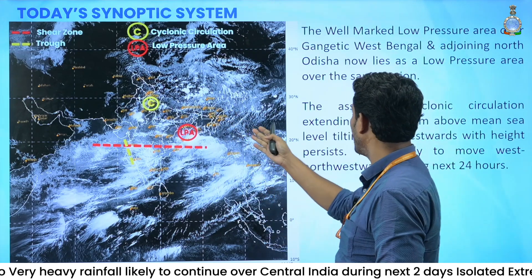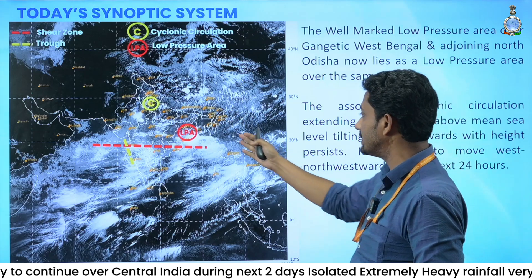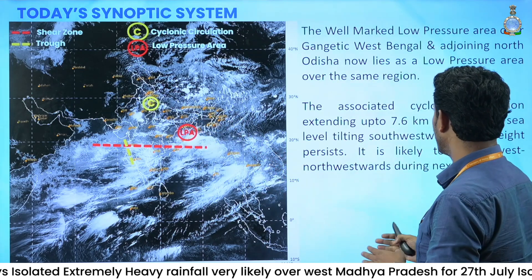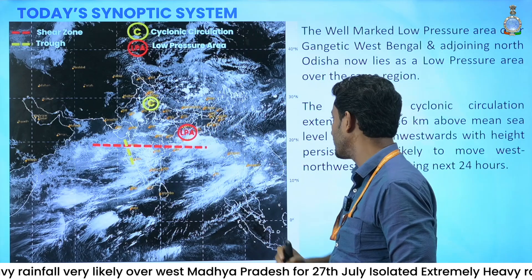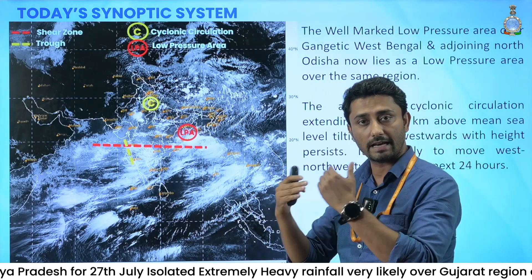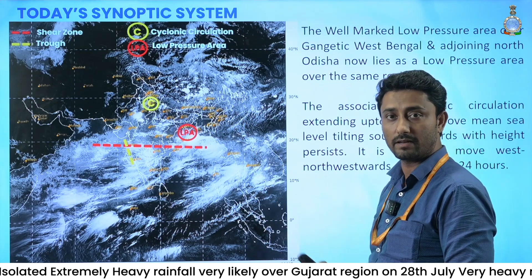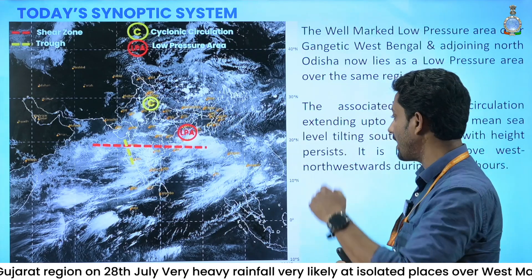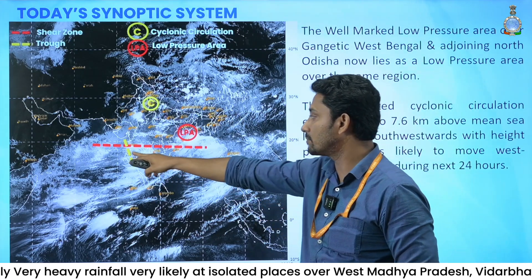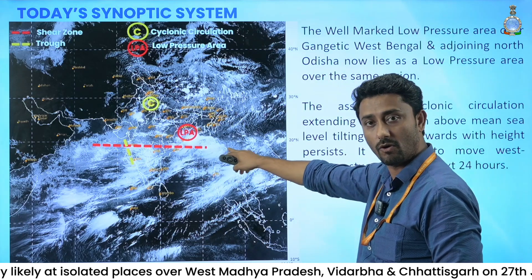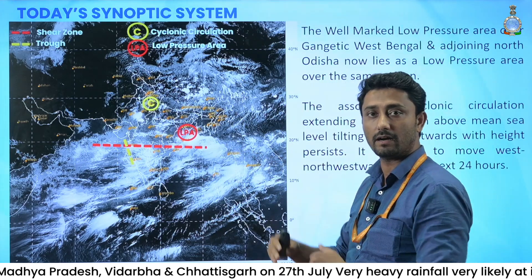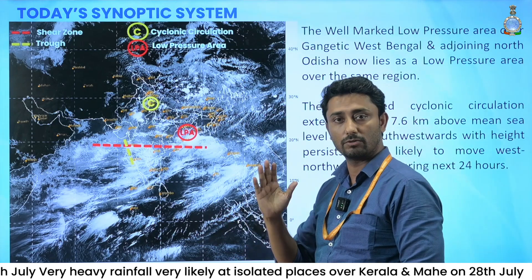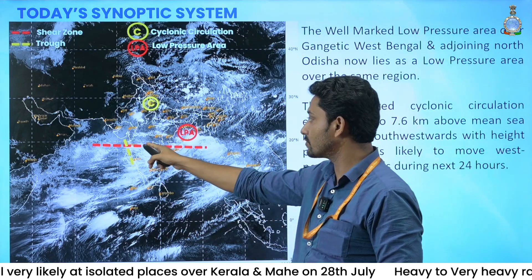There are other synoptic systems also existing. You can see the well-marked low pressure area over Gangetic West Bengal and North Odisha, which now lies as a low pressure area over the same area. The associated cyclonic circulation extends up to 7.6 kilometers from mean sea level and is tilted southward with height. The shear zone passes through 18 degrees north, extending from 5.8 up to 7.6 kilometers from mean sea level, also tilted southward with height.